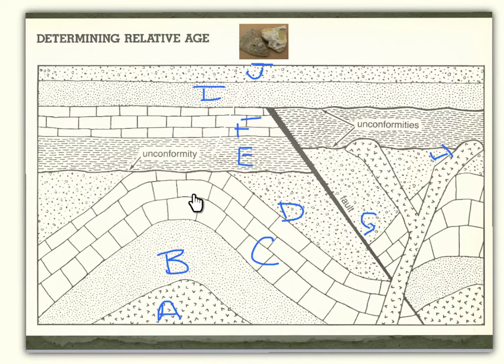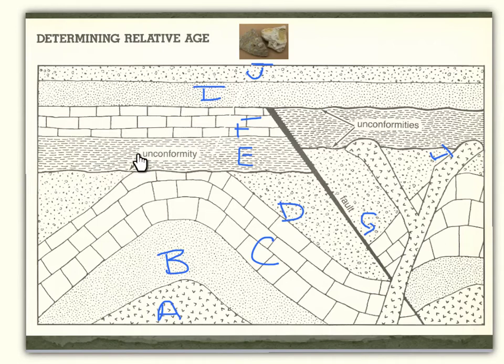And here we have the law of superposition. Over here, letter H is our igneous intrusion. Since it sits on top of the fault, our igneous intrusion is actually younger than our fault. And I also see unconformity — we have some missing rock parts due to erosion.